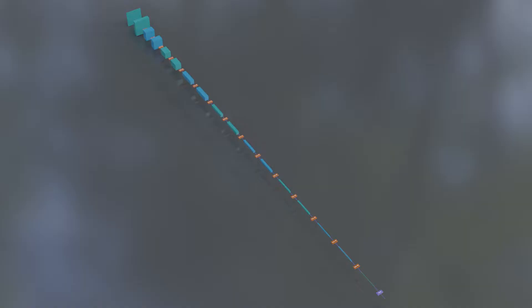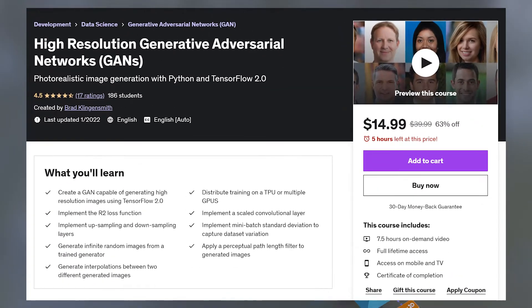But I don't want to leave you hanging, so to give you a sense of the number of filters you might use in practice, let's take a look at a real-world architecture. This is based on a model from my high-resolution GAN course on Udemy, link in the description.